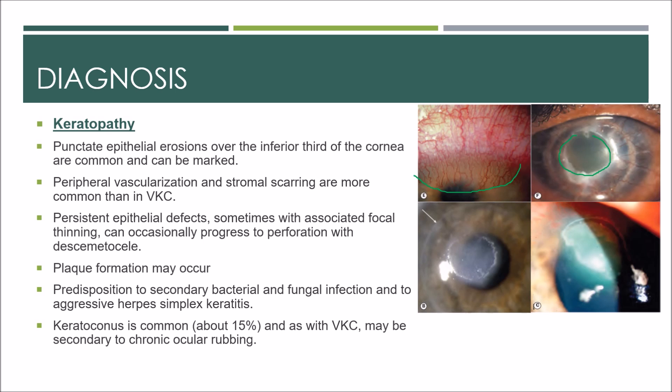Persistent epithelial defects may lead to plaque formation. Predisposition to secondary bacterial and fungal infection and to aggressive herpes simplex keratitis is also present. Keratoconus is common, occurring in about 15% of cases, and as with VKC, may be secondary to chronic ocular rubbing.